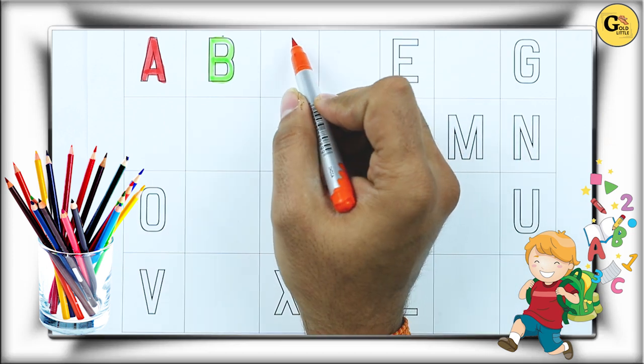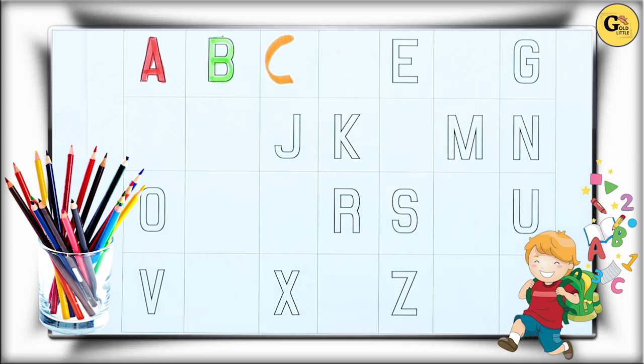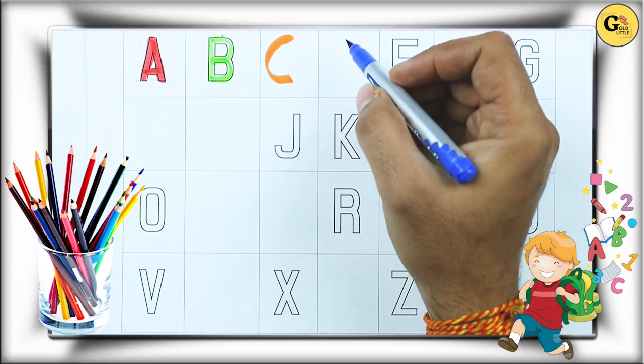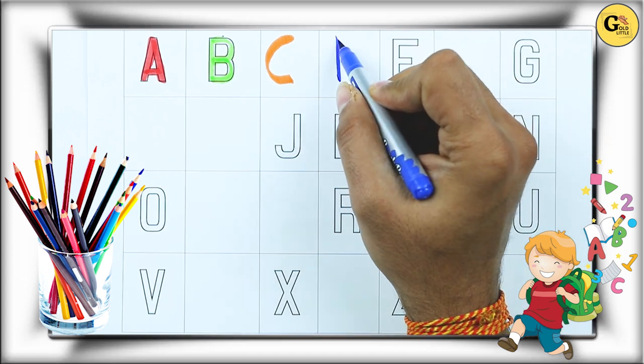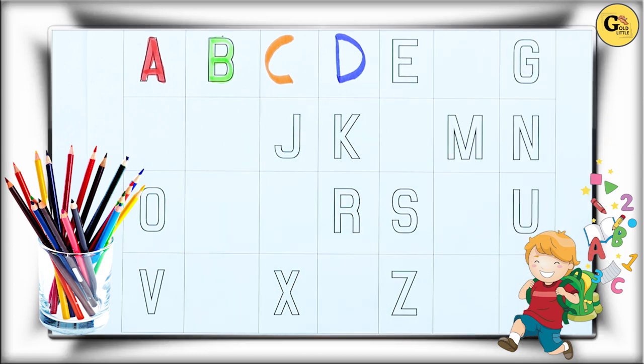C. What's next? C. C with orange color. C for cat. What next? Tell me, tell me. Yes, right. D. D for dog with blue color.